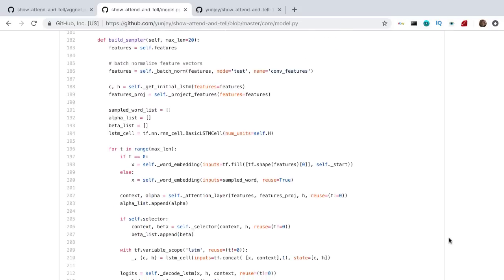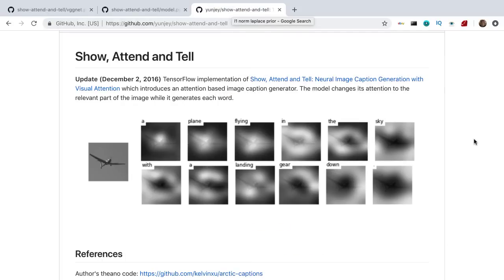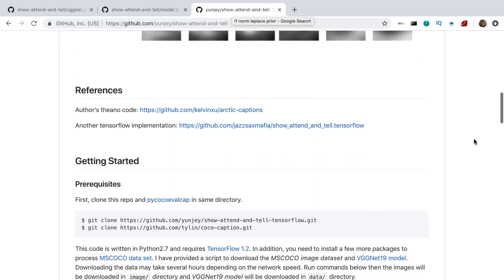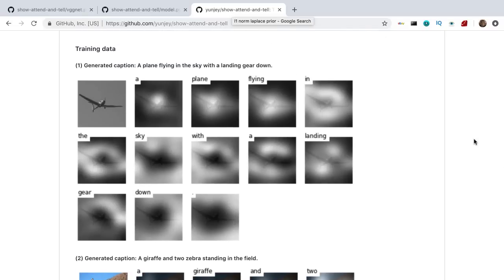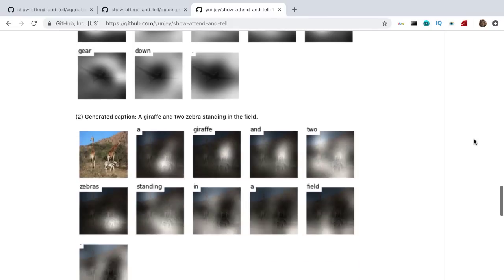The results are pretty slick. The image captioner is able to generate meaningful captions for the input images. Note that these results are for soft attention, but it can be modified easily for hard attention. If you want to know more about soft and hard attention, I've made a video on visual attention from a different perspective, so check that out.